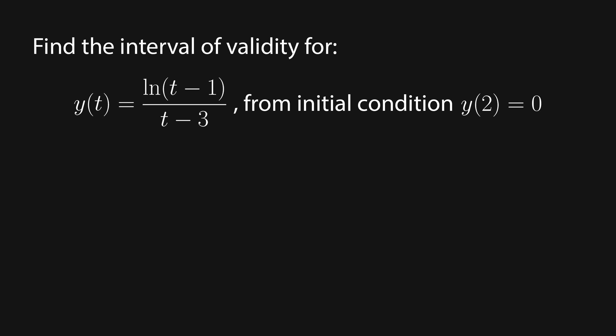Let's say we've solved an IVP with initial condition y of 2 equals 0. Our final specific solution is y of t equals natural log of t minus 1 over t minus 3. There are two things we need to pay attention to: the natural log and the denominator of our fraction.